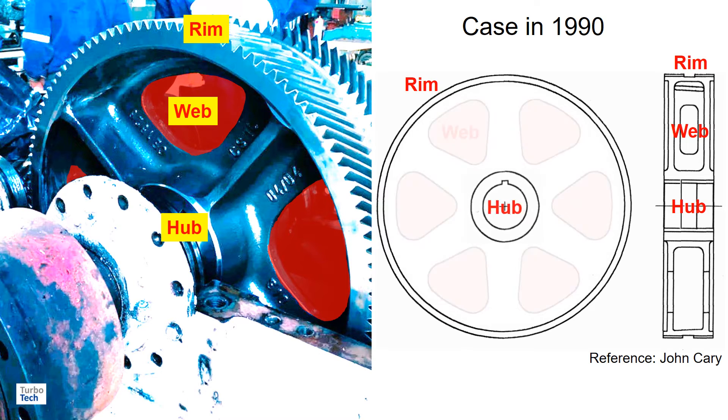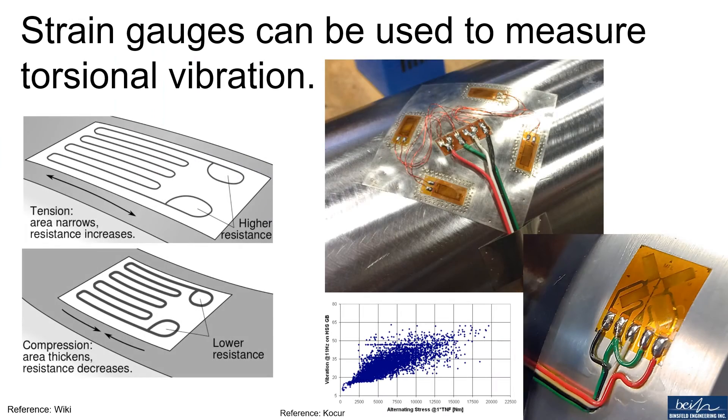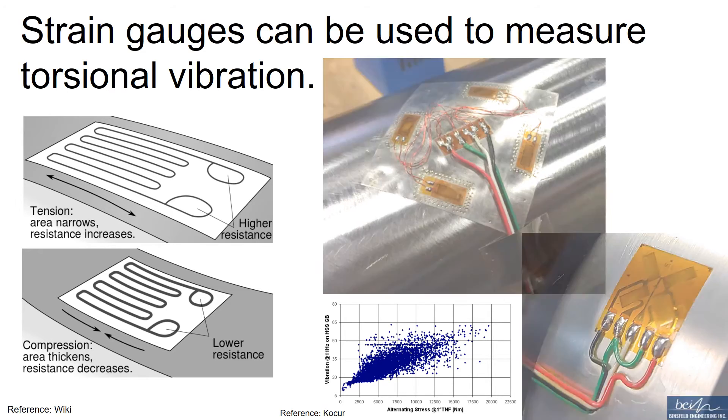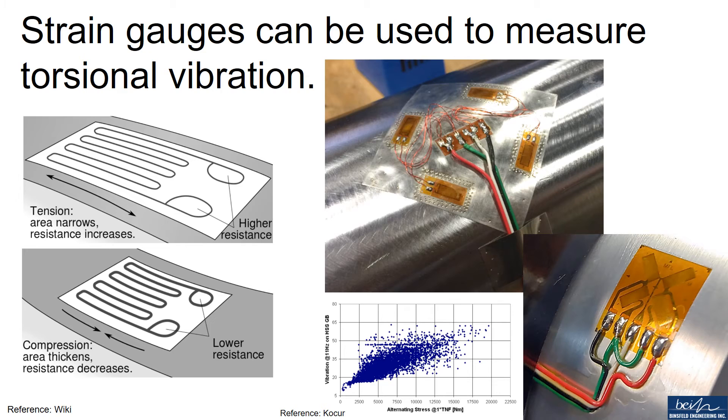This design change can prevent vibration-induced machine failure. There are many ways to monitor torsional vibration, such as using strain gauges.